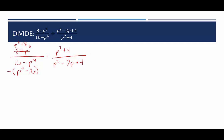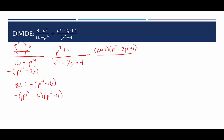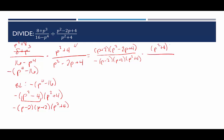p cubed plus 8 is a sum of cubes, factoring into (p plus 2)(p squared minus 2p plus 4). The bottom left is negative(p to the fourth minus 16): p to the fourth minus 16 is a difference of squares, giving (p squared minus 4)(p squared plus 4). Then p squared minus 4 is also a difference of squares, factoring further into (p minus 2)(p plus 2). p squared plus 4 cannot be factored. So the bottom left is negative(p minus 2)(p plus 2)(p squared plus 4). The top right, p squared plus 4, cannot be factored, so it stays as a single factor. The bottom right, p squared minus 2p plus 4, also cannot be factored.